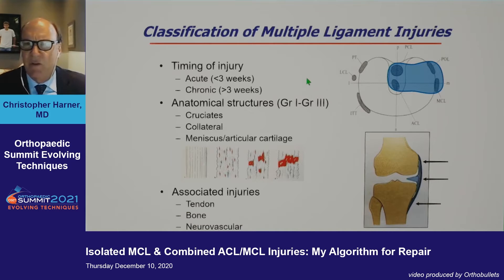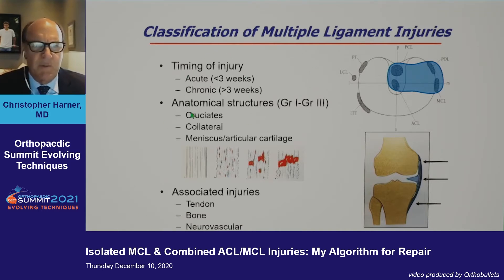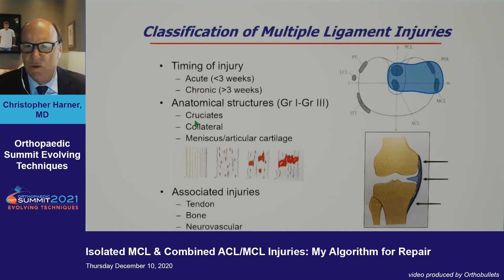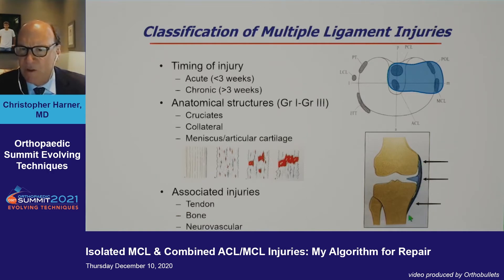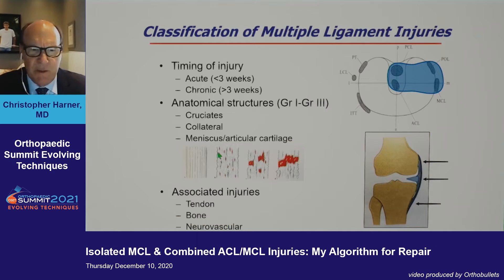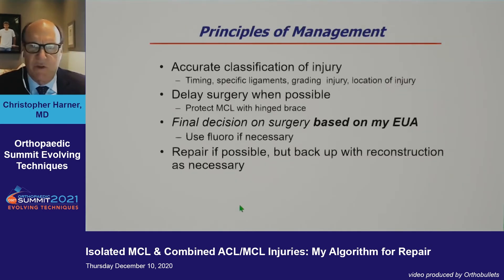My simple classification system for multiple ligament injured knees covers: timing of the injury (acute versus chronic), which cruciates are involved, specifically with the MCL which part is involved, the grade of the injury (proximal, mid, distal), and in multiple ligament injured knees, associated injuries.